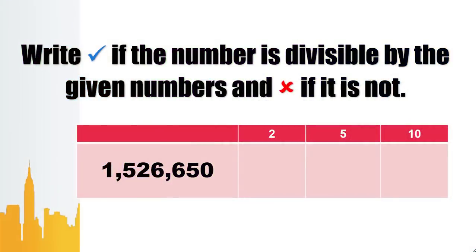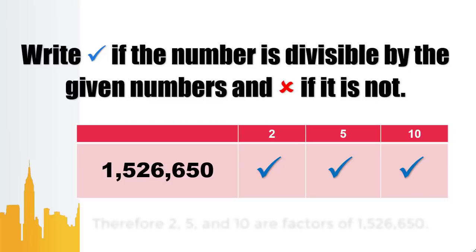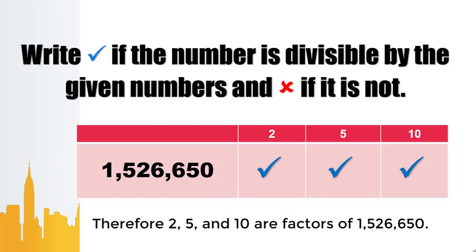Now, going to the divisibility test. Is 1,526,650 divisible by 2? Yes, since the digit on the 1's place is even. How about 5? Yes — the digit on the 1's place is 0. How about 10? Yes — the digit on the 1's place is 0. Therefore, 2, 5, and 10 are all factors of 1,526,650.